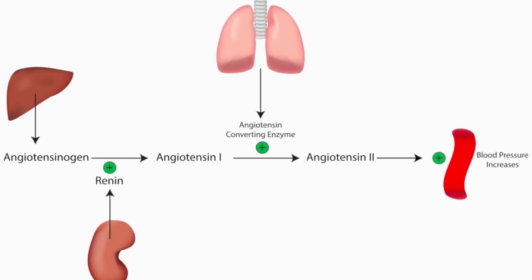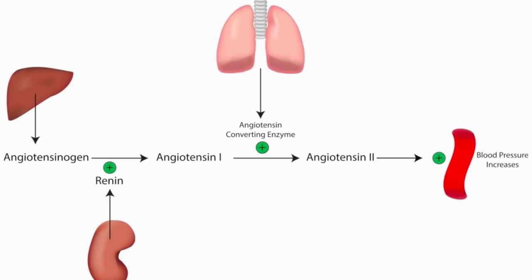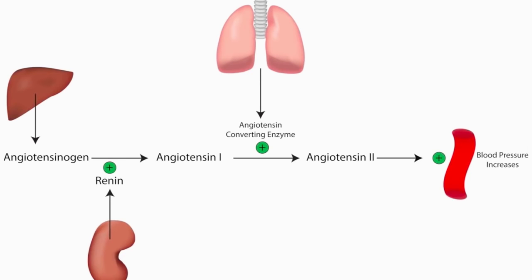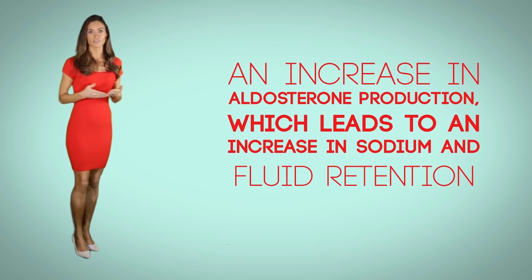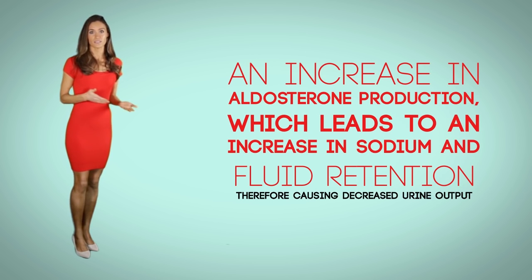Now let's look at the effects of decreased renal perfusion. When kidney perfusion is decreased due to low cardiac output, this leads to an increase in renin production, which leads to an increase in angiotensin 1, which converts to angiotensin 2 with the help of the ACE enzyme. The final effect of angiotensin 2 is a rise in blood pressure or afterload, which can further decrease cardiac output and lead to further decrease in renal perfusion. The second effect of angiotensin 2 is an increase in aldosterone production, leading to increased sodium and fluid retention, therefore causing decreased urine output.